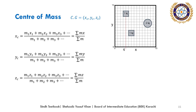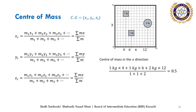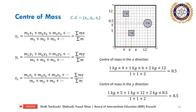In the diagram, there is a square of 1 kg, a circle of 2 kg, and another square of 1 kg, all connected. To find the center of mass of this system: the first square has x-coordinate 4, the second square has x-coordinate 6, and the circle has x-coordinate 12. Similarly for y-coordinates: the first box (1 kg) has y = 5, the circle (2 kg) has y = 8.5, and the third box (1 kg) has y = 12. After substituting into the formula and solving, the center of gravity coordinates come out as approximately (8.5, 8.5).